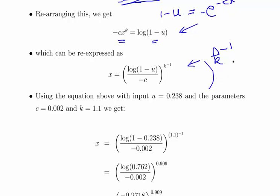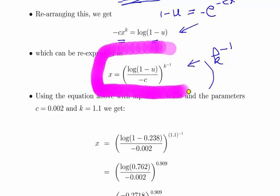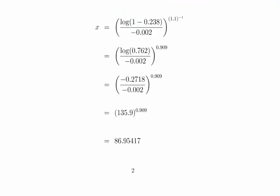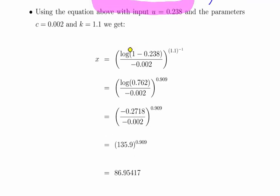So essentially that's what we do. For some value u, and also noting that k is equal to 1.1 and c is equal to 0.002, we essentially just evaluate it. Just as a remark, when you're doing this out by pen and paper or by calculator, or even using a computer, a little bit of rounding error will kick in, so just be careful of that.